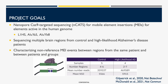Today, I'll be showing some preliminary data from this project, where we've used NCATS to sequence MEIs across multiple brain regions from post-mortem tissue from individuals with a high likelihood of Alzheimer's disease, as well as from control individuals. We are targeting elements that are active in the human genome and are using guide RNAs targeting L1HS, ALUYA5, and ALUAYB8. So far, we've sequenced around 40 regions from 9 brain samples. With this data, we will be able to characterize non-reference events both between regions from the same individual and between patients and patient groups.